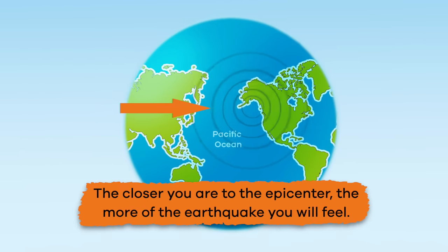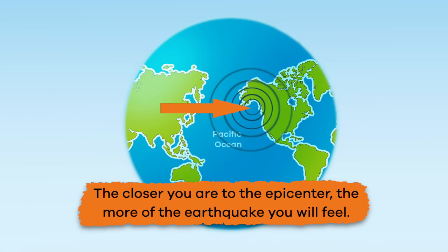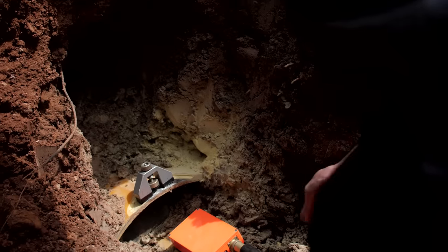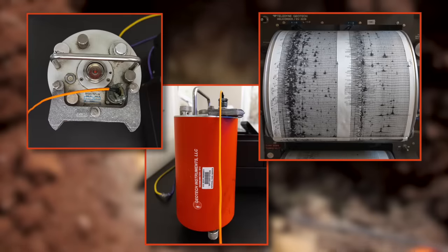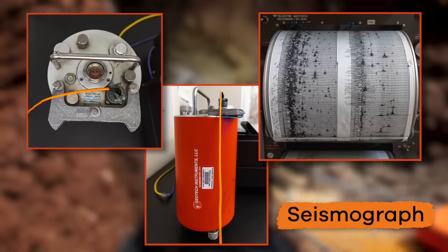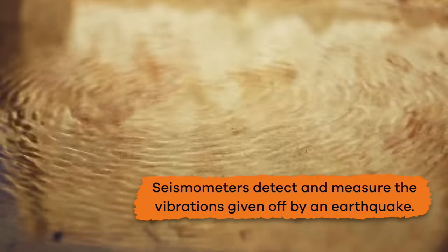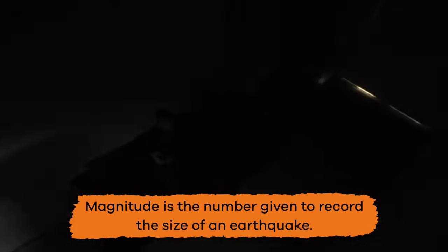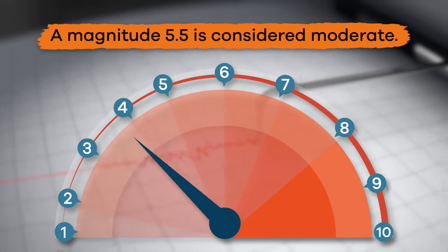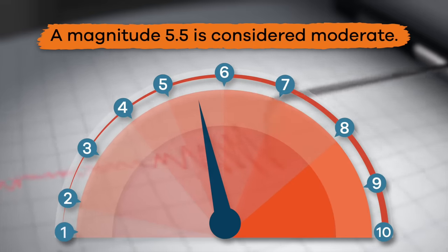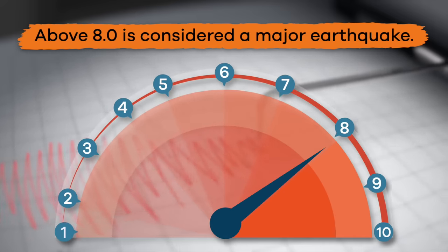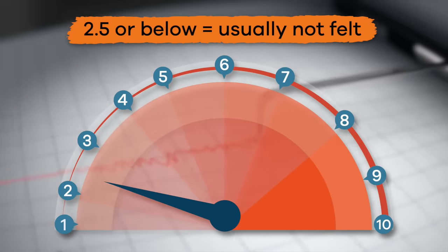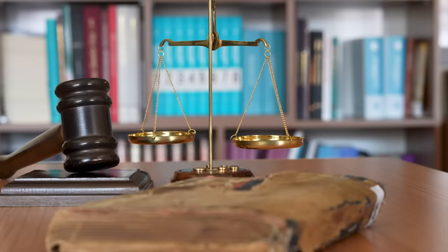The epicenter is the location of an earthquake on the earth's surface. The closer you are to the epicenter, the more of the earthquake you will feel. Earthquakes lose intensity as they travel away from the epicenter. Scientists measure the intensity of an earthquake using a special device called a seismograph. Seismometers detect and measure the vibrations given off by an earthquake. Magnitude is the number given to record the size of an earthquake. For example, a magnitude 5.5 is considered moderate, above 8.0 is considered a major earthquake and we see one every year or two, and earthquakes measured at 2.5 or less are usually not felt but can be recorded.